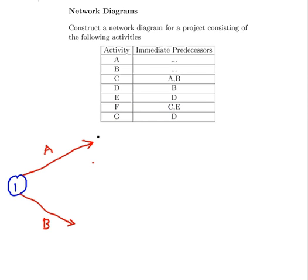Now let's put in some nodes here, 2 and 3. So the next activity is activity C and it depends on A and B. So what I'm going to do is have activity C pointing from node 2. So that's activity C.